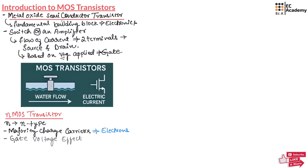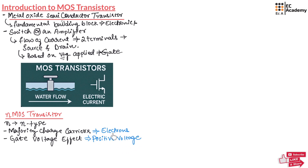Next is the gate voltage effect. To allow current flow from source to drain, we need to apply a positive gate voltage relative to source. This positive voltage attracts electrons into the channel, creating a path for current flow. The more positive the voltage across the gate, the more electrons are pulled into the channel and the current will also increase.